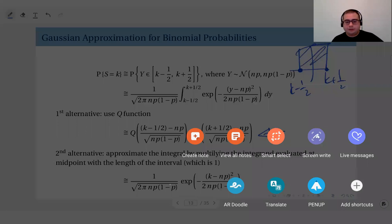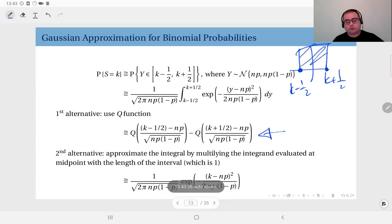Second alternative is in fact easier. What you do is well at the end of the day you are trying to compute the area here. So rather than using the Q function, what you do is since you know this interval is of length one.